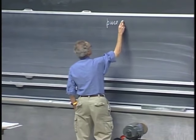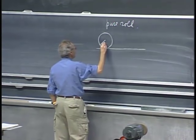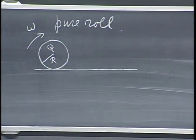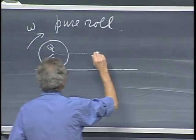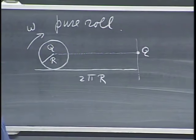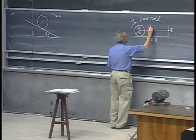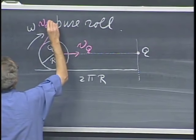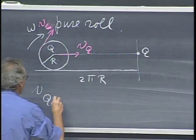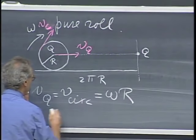What is pure roll? If here is an object — cylinder or sphere — with radius r, and I rotate it and roll it in this direction, the center is called point Q. Once it has made a complete rotation, if point Q has moved over a distance of 2πr, then we call that pure roll. When we have pure roll, the velocity of point Q and the velocity of the circumference are the same. So V_Q equals V_circumference, and V_circumference is always ω·r. This part always holds, but for pure roll, this also holds.